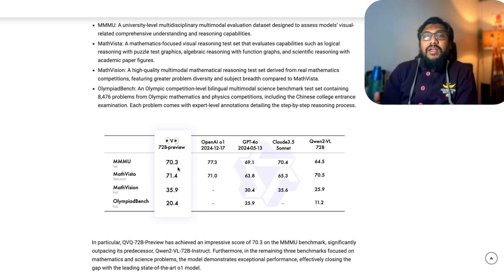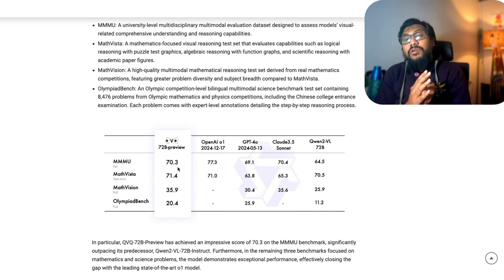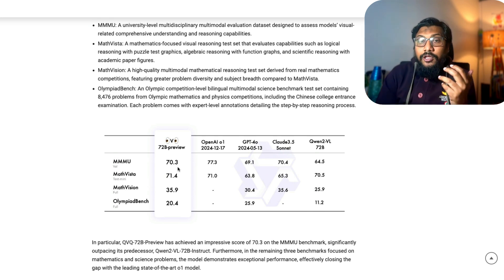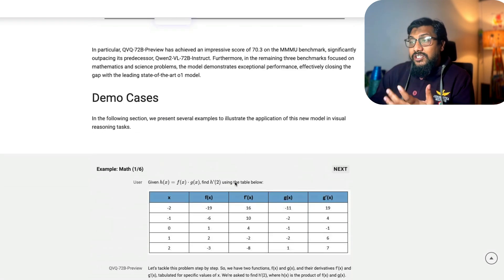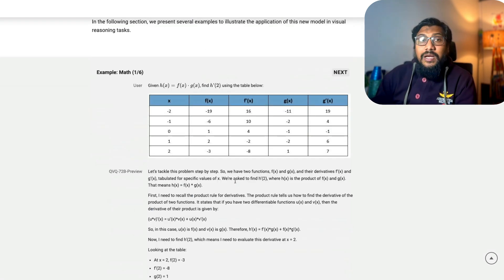Olympiad Bench, this has scored 20.4 where GPT-4 has scored 25. This has been my concern with the reasoning models or the thinking models. They seem to be really good at certain sets of problems but sometimes they seem to be extremely bad. So it's very hard to figure out what is the use case where these models are particularly good at.